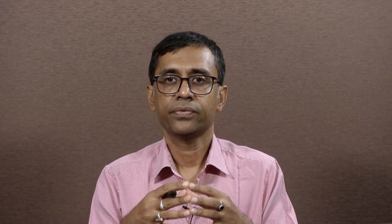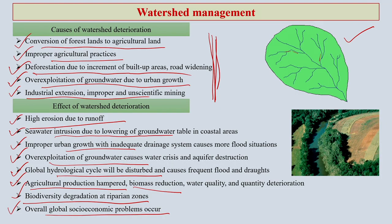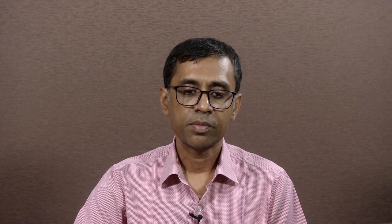Overall, because of all these effects, global socio-economic problems will occur — it will start at the local level then go global. If a watershed is affected by mismanagement of resources and improper land use changes, we could end up having socio-economic problems in an area, exactly as we see happening in many parts of the world.